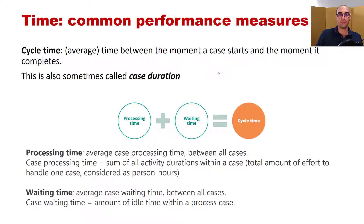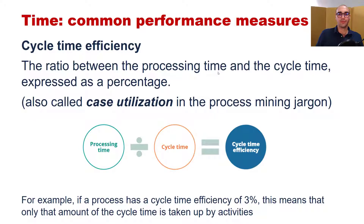The summation of the processing time and the waiting time is the cycle time. For every case we have a case duration or cycle time, so in most event logs we report the average, median, and total of these cycle times. The second performance measure is cycle efficiency, which is the ratio of processing time to cycle time. This gives us the efficiency of the process — the higher the efficiency, the better.